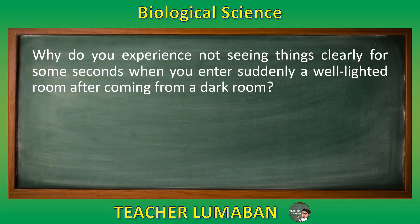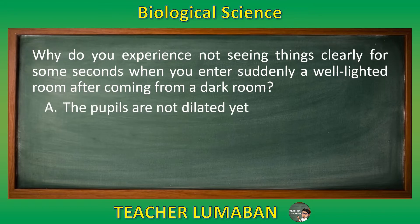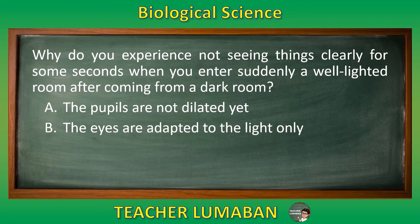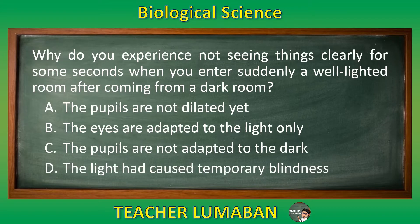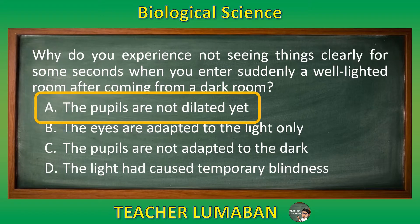Why do you experience not seeing things clearly for some seconds when you enter suddenly a well-lighted room after coming from a dark room? Letter A: The pupils are not dilated yet. Letter B: The eyes are adapted to the light only. Letter C: The pupils are not adapted to the dark. Letter D: The light had caused temporary blindness. The correct answer is letter A — the pupils are not dilated yet. People experience not seeing things clearly because the pupils are not dilated yet.